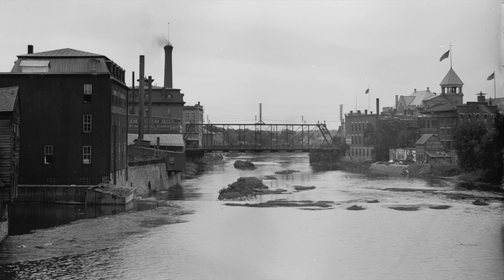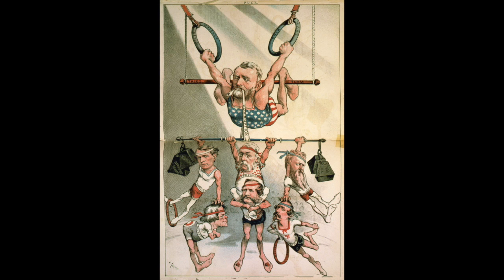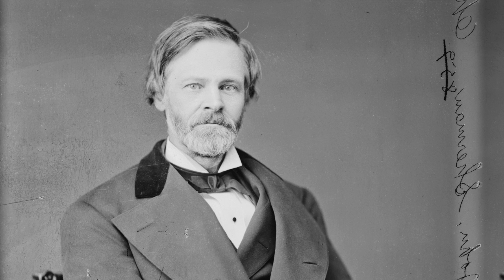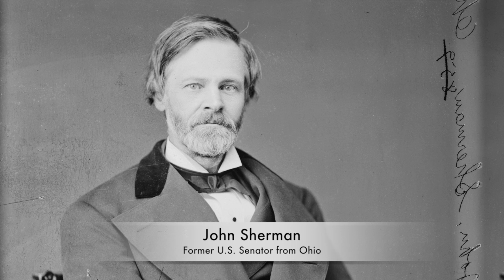After deciding against it in 1876, Ulysses Grant shocked several people when he decided to run for a third term. Many Republicans were all for it, but he had opponents. One was the aforementioned James Blaine; there was also John Sherman, the brother of Civil War General William Tecumseh Sherman, a former senator from Ohio, and James Garfield, a representative from Ohio.